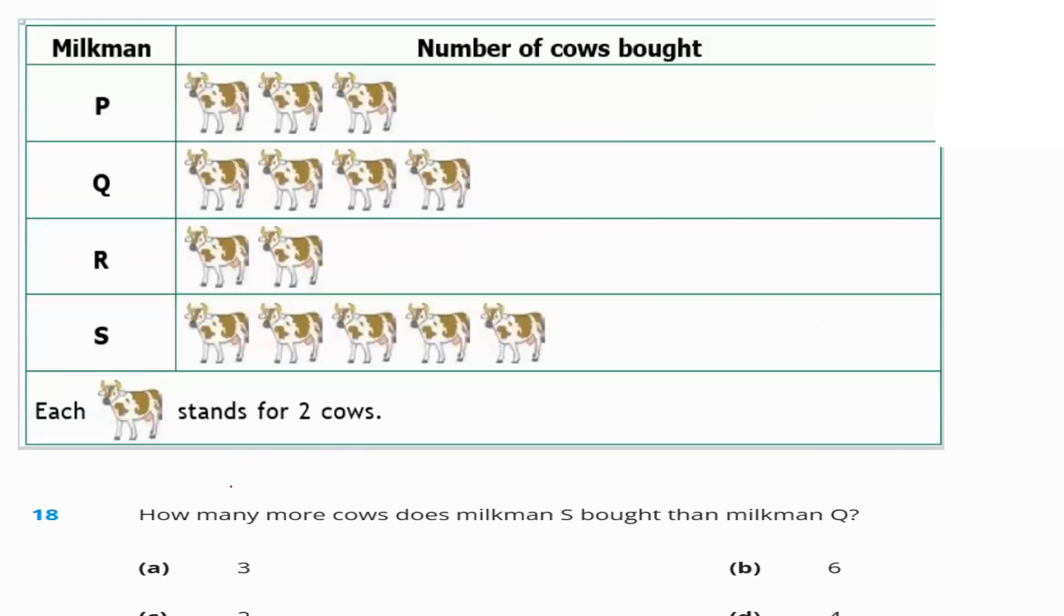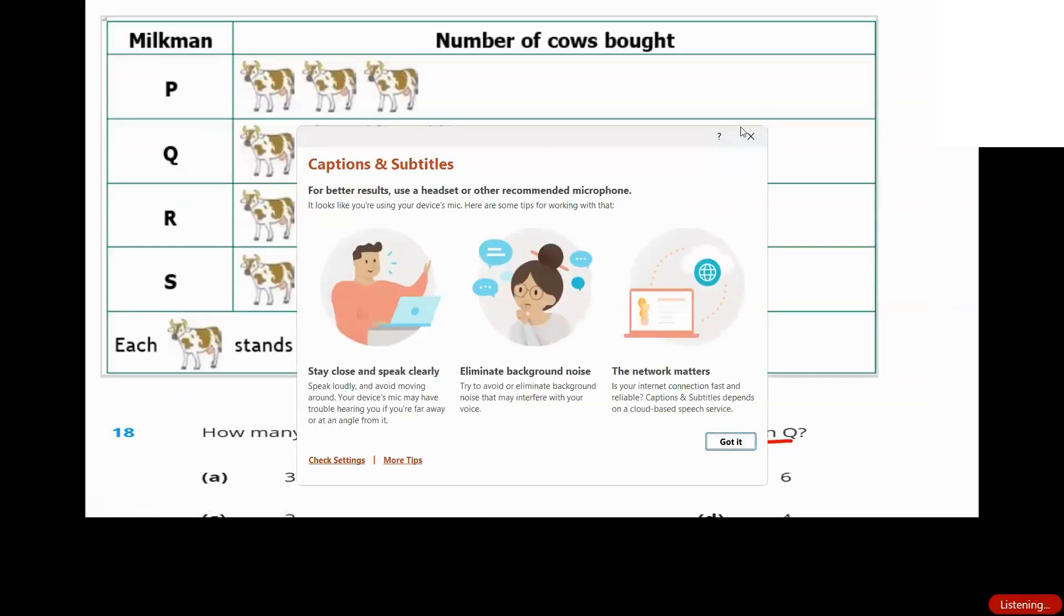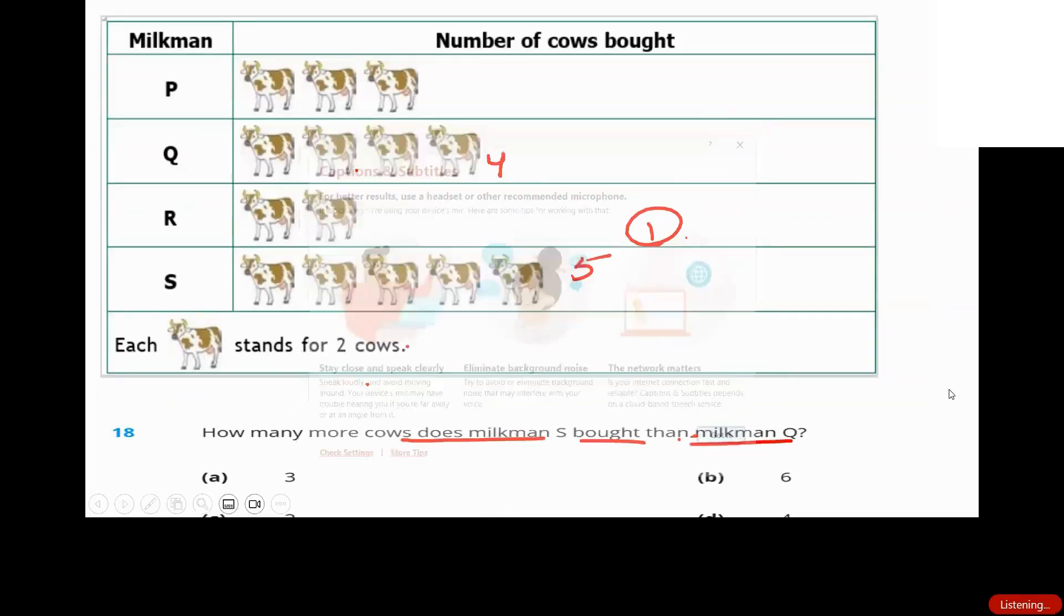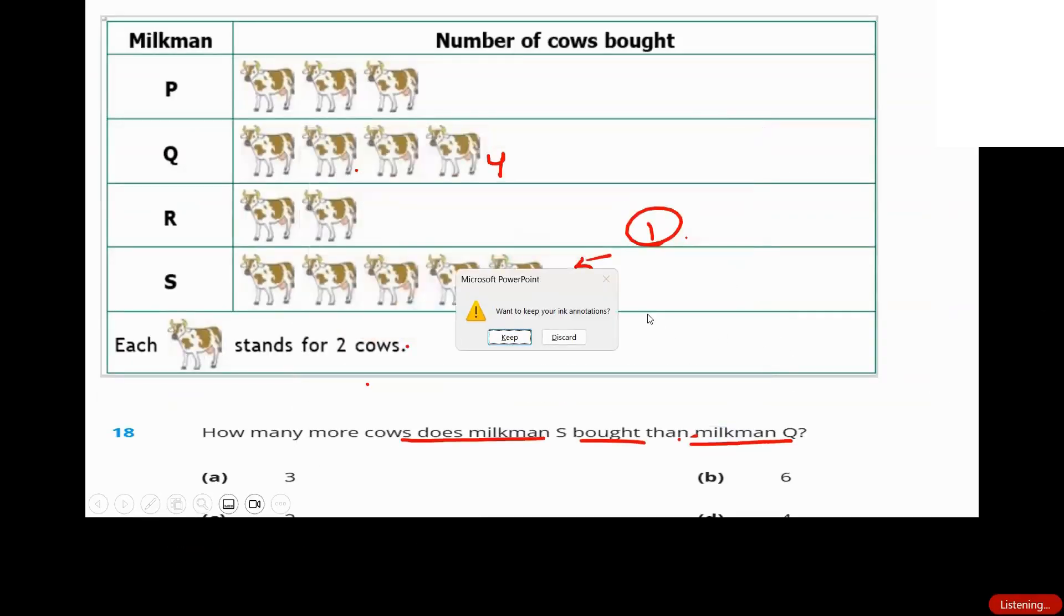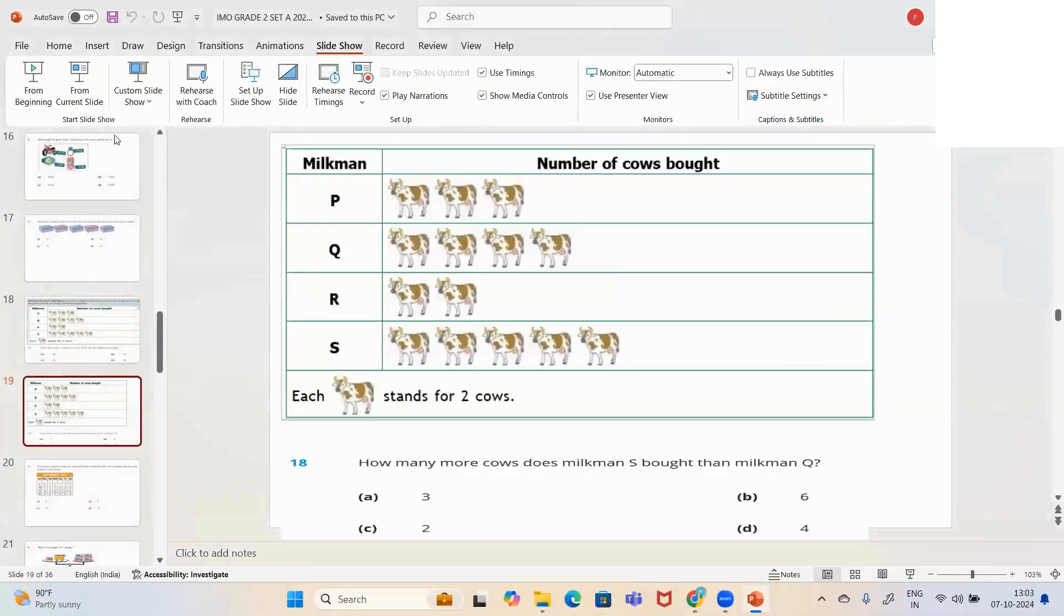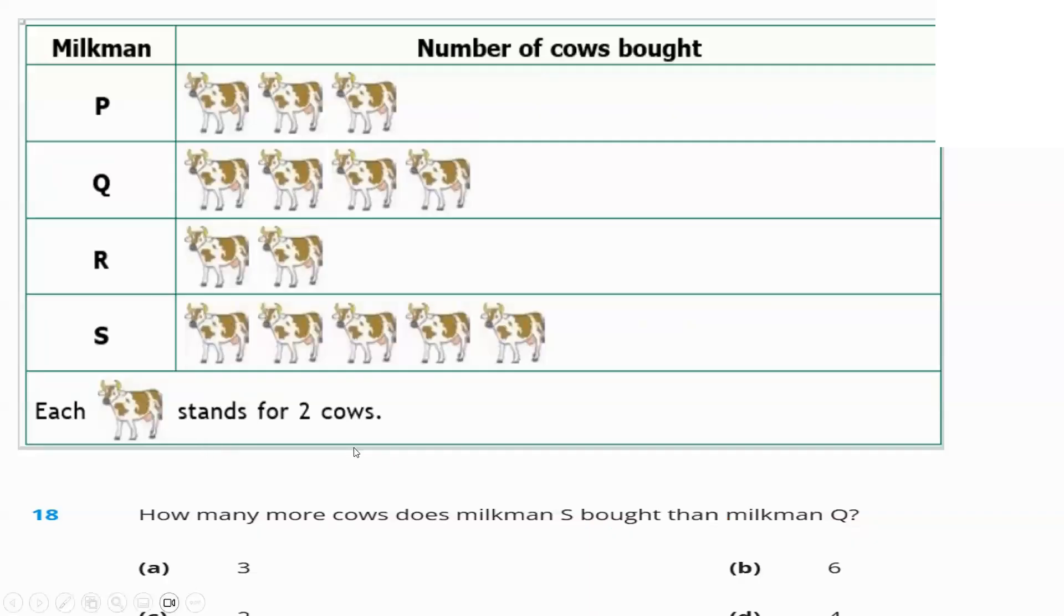The next question. How many more cows does milkman S buy than milkman Q? What's the difference? Four over here, five over here. Difference of one symbol. One symbol stands for two cows. So, two cows. Option C is the answer.